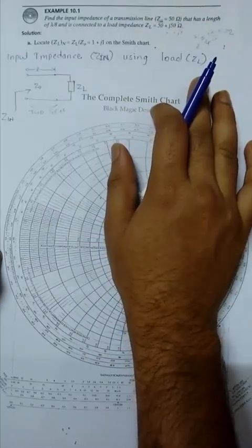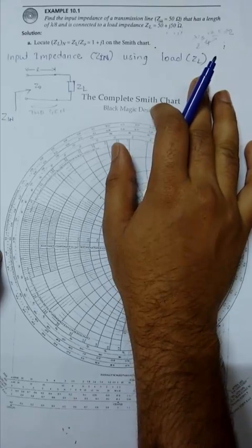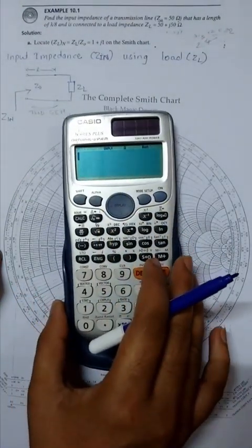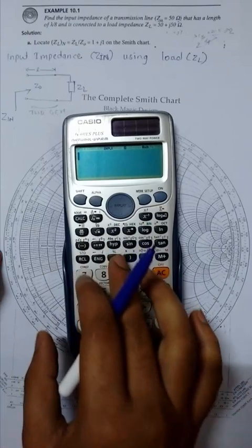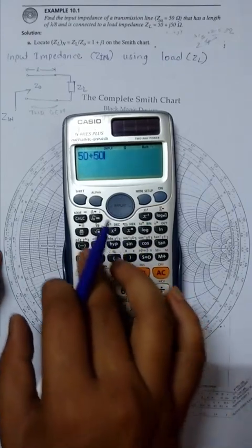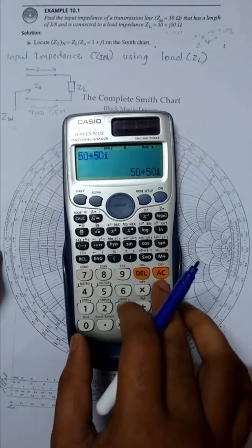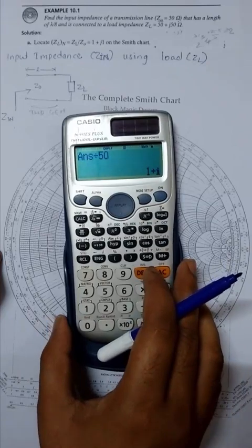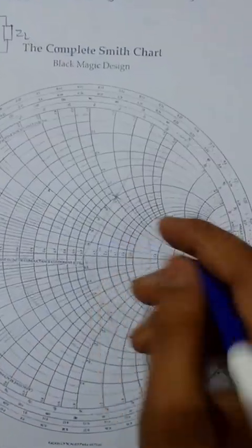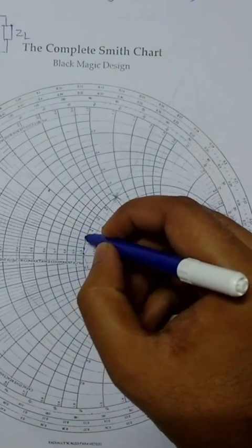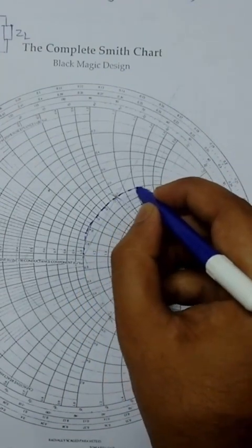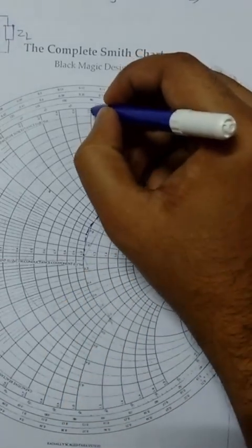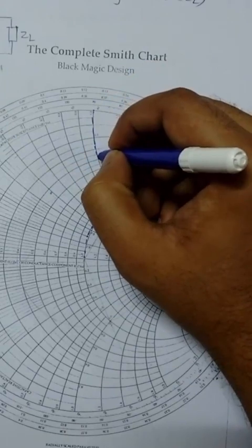First step is to locate normalized ZL where ZL by Z0 equals 50 plus 50j divided by 50, which equals 1 plus j1. So I have to plot this: 1 on the real axis and plus j1, which is positive reactance.